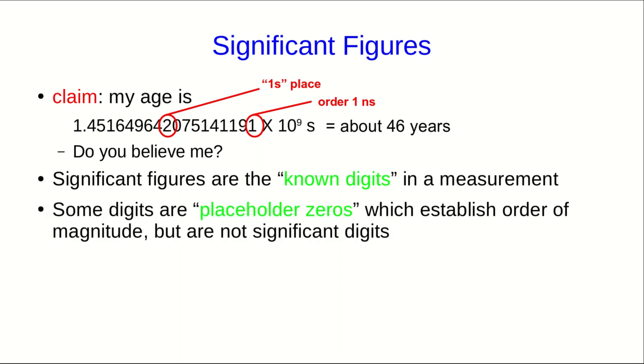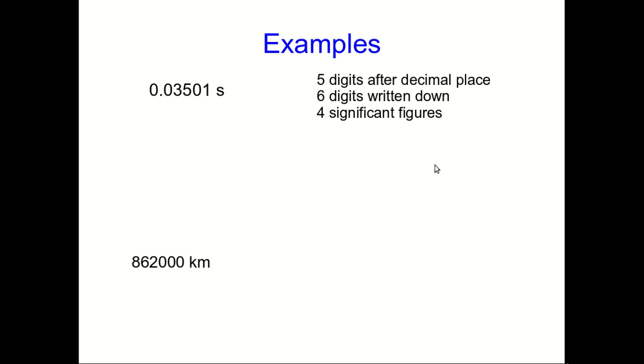A caution, which I'll illustrate with some examples, is that zeros are a little complicated. Some zeros are significant figures, but others are what are called placeholder zeros, which just tell you the order of magnitude of the other digits. Look at this first number that I've written, 0.03501 seconds. I'm going to tell you it has five digits after the decimal place. We'll just count them. And there are six digits written down because there's the zero before the decimal place. But it only has four significant figures. Those first zeros are not significant figures. They're placeholder zeros. They're there to tell you that that first digit, the three, is in the one hundredths of a second place. So they're establishing the order of magnitude. They're not telling us anything about what digits we actually know. And so this is the same as writing 3.501 times 10 to the negative two seconds. And if you write it that way, it's clearer that it has four significant figures.